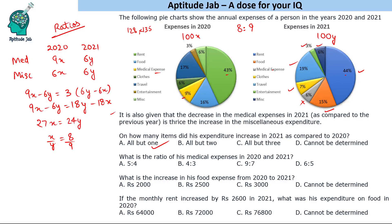Question 2: What is the ratio of medical expenses in 2020 and 2021? In 2020 medical is 9% of total (8 parts) = 9×8 = 72. In 2021 it is 6% of total (9 parts) = 6×9 = 54. So the ratio is 72:54 = 4:3.